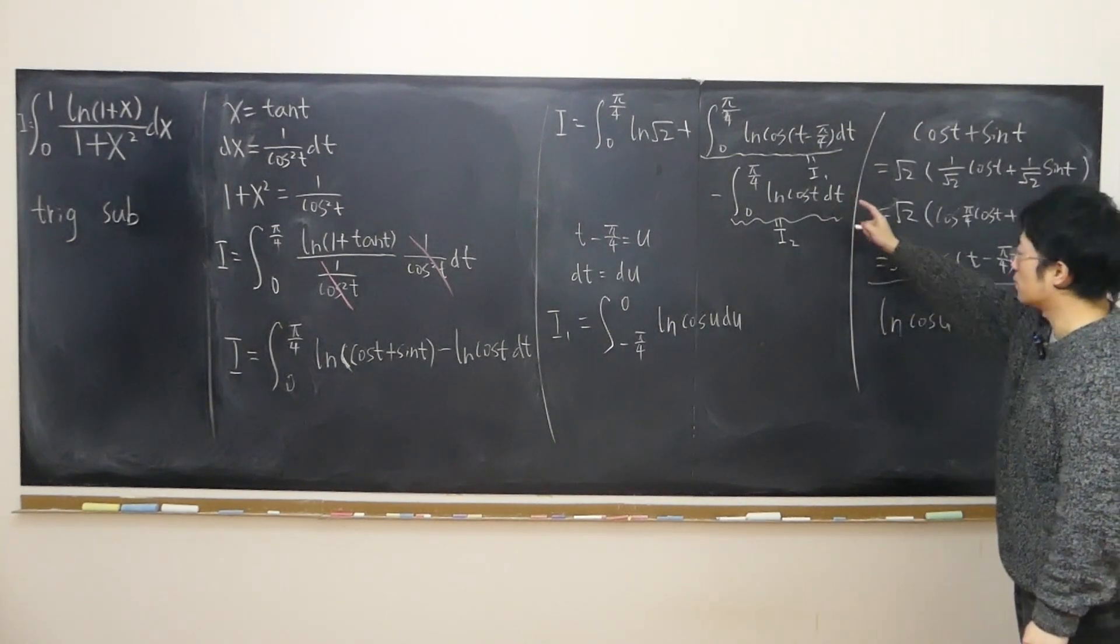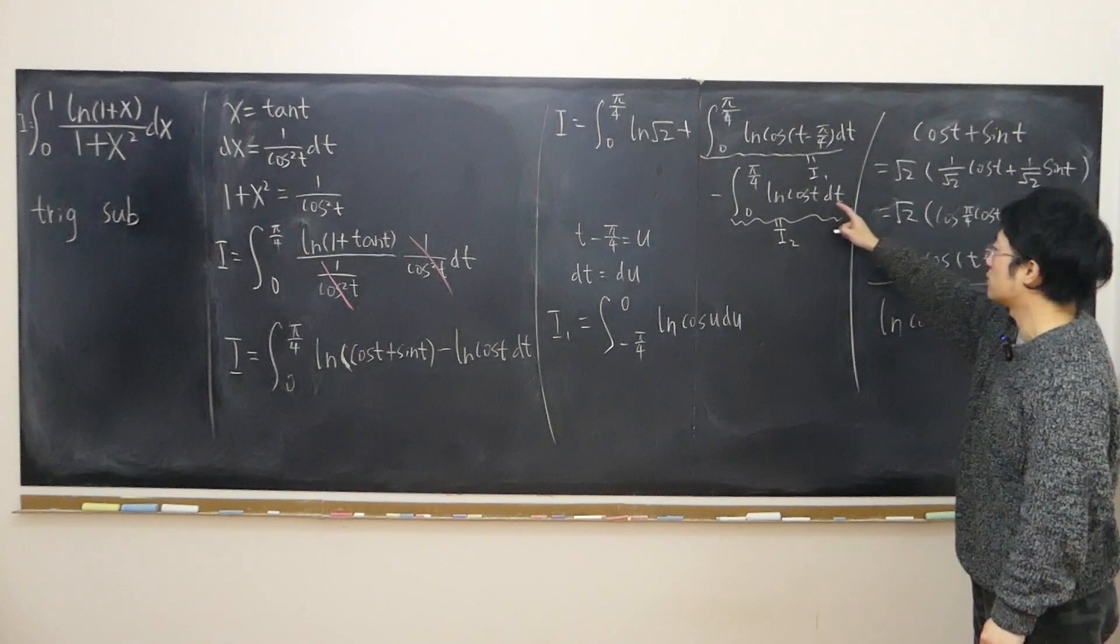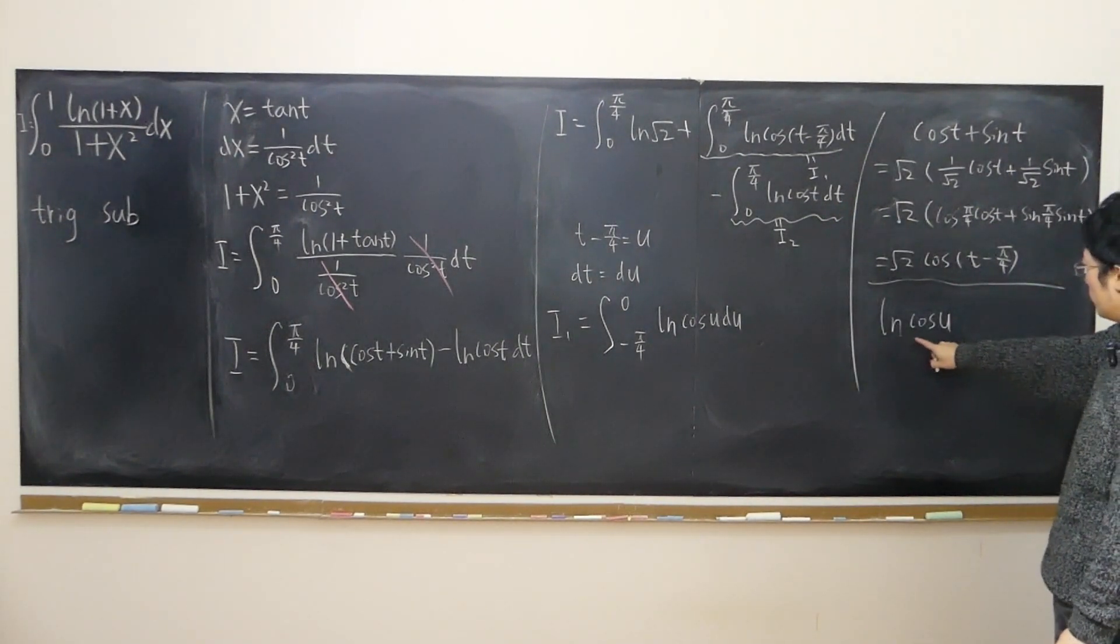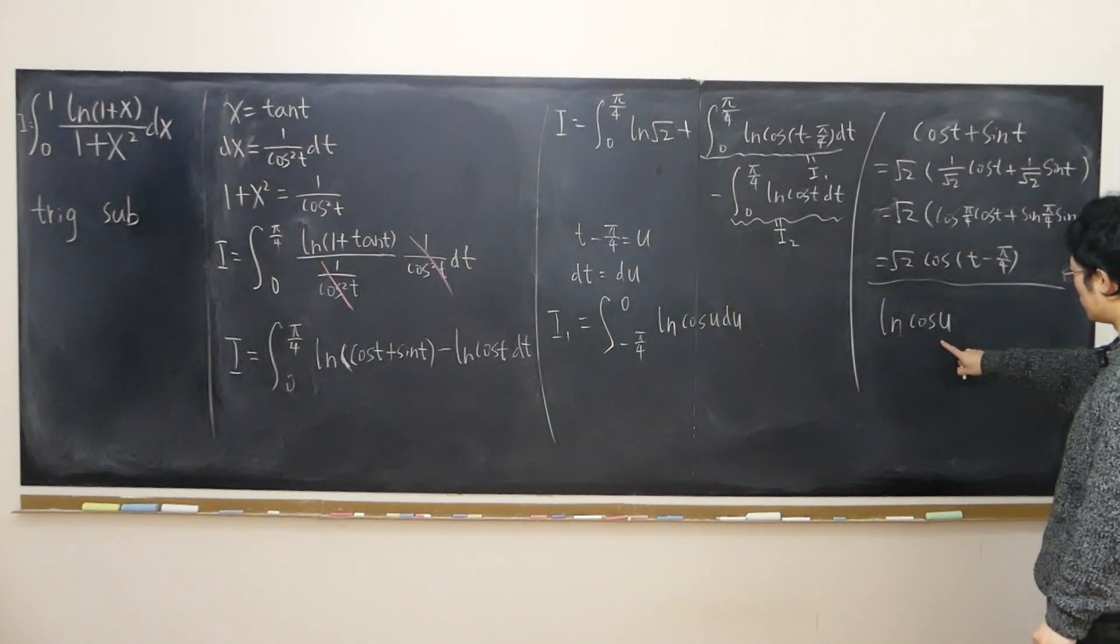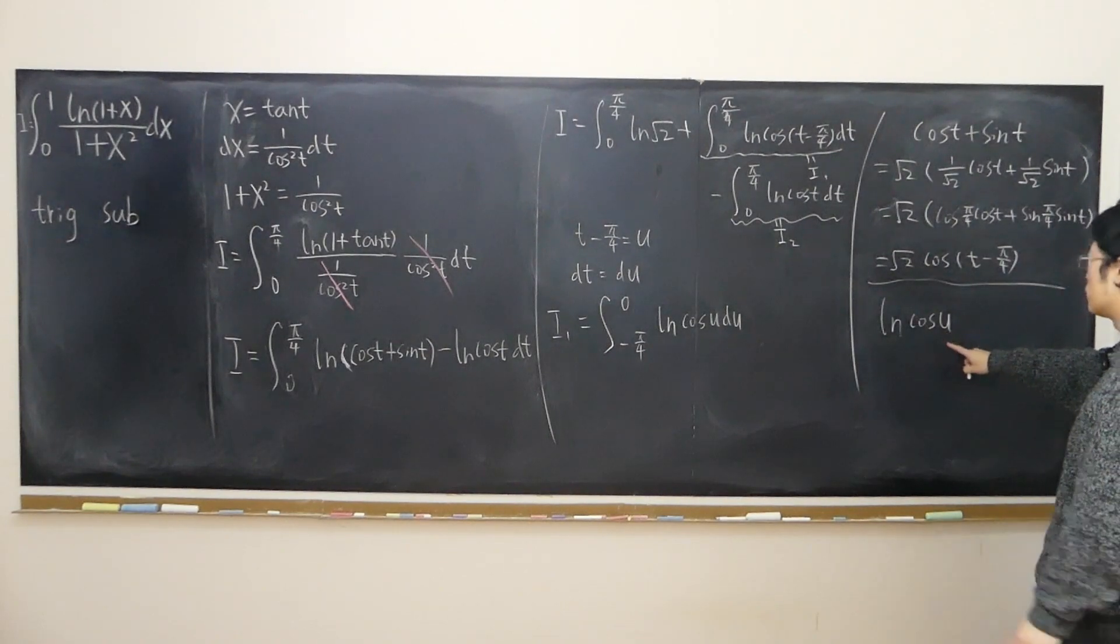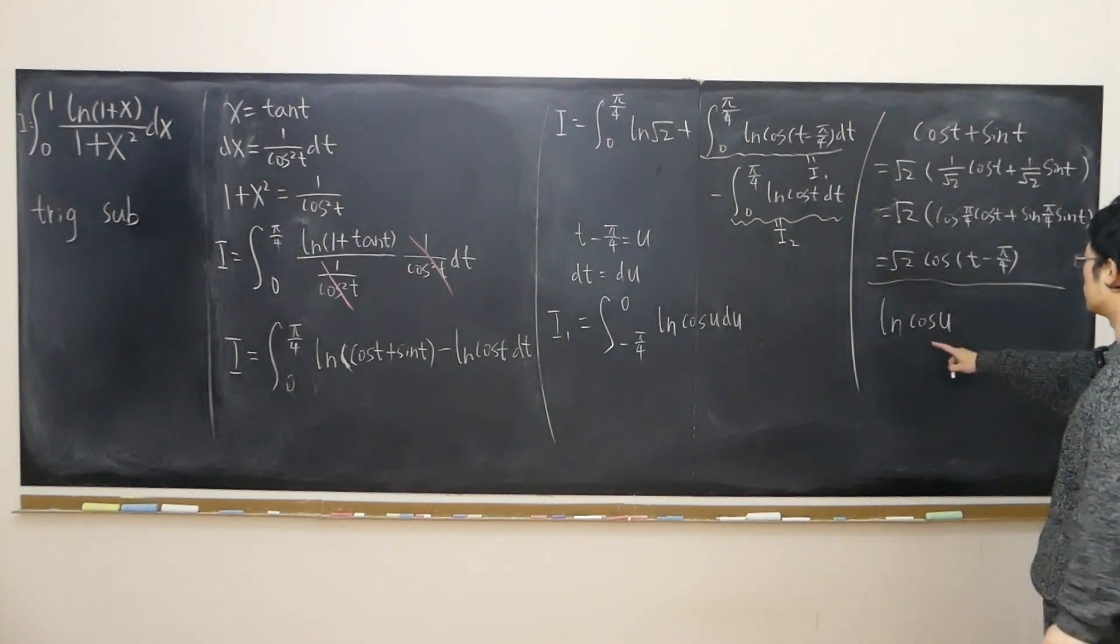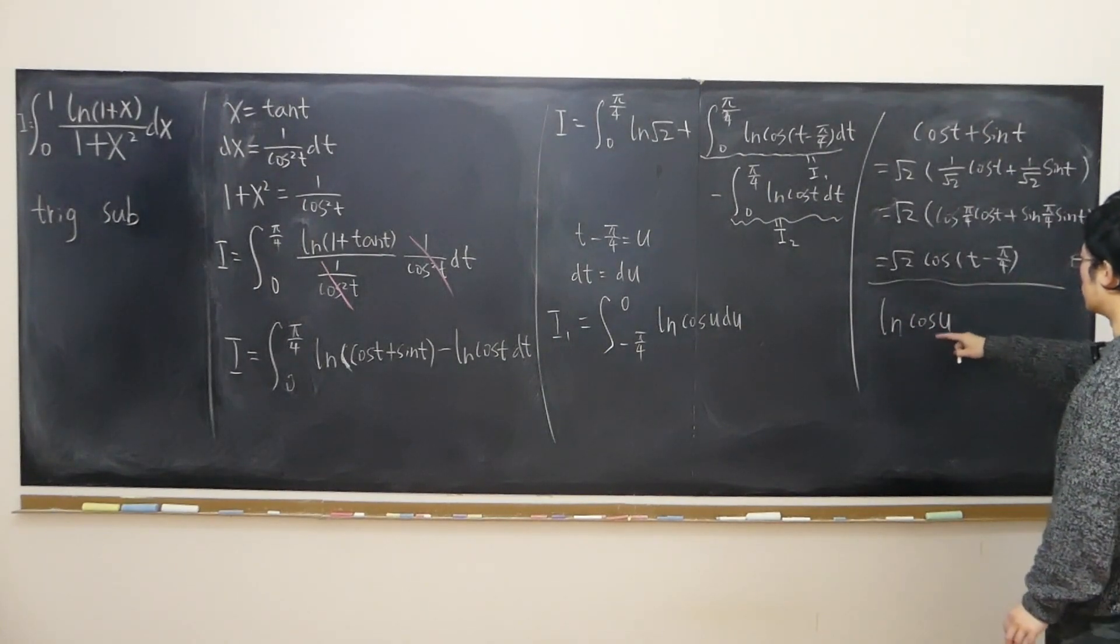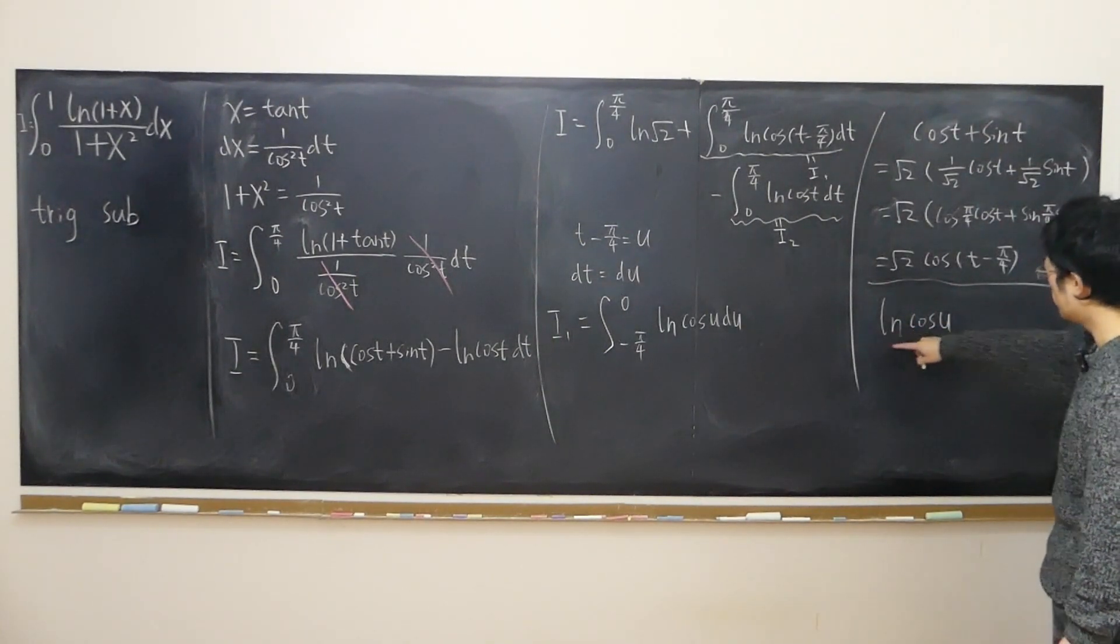Here I use t, but it doesn't matter, because as long as it's consistent. So this function of u is obviously an even function, right? Because if u becomes a negative u, since cosine is already an even function, log of cosine u equals log of cosine minus u. Even function.